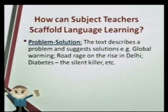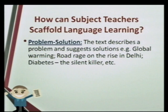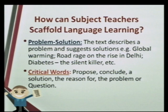Students have to be made aware of different text structures. Another text structure is problem and solution, where the text describes a problem and then suggests solutions. For example, global warming is a problem — what are the solutions? Or widespread occurrence of diabetes and the solutions for it. Critical words here would be 'propose,' 'conclude,' 'a solution,' 'the reason for,' and 'the problem or question.'